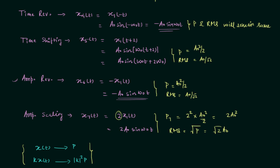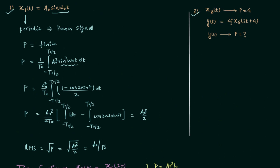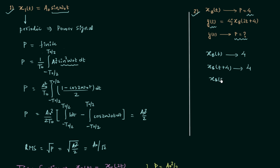Now we use all these properties to solve the second question. Signal x8t has average power equal to 4. Another signal yt = 4j·x8(2t + 4), meaning multiple operations have been performed on x8t. We need to find the average power of yt. First, applying time shifting to get x8(t + 4): time shifting has no effect, so the average power remains 4.